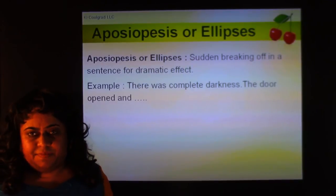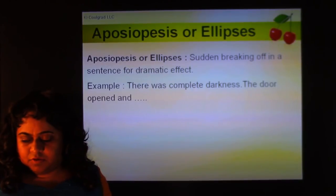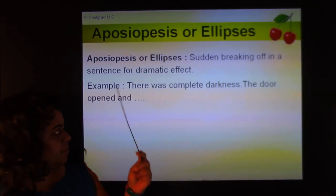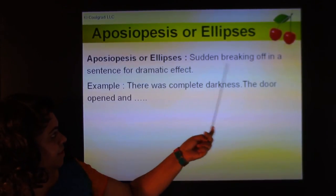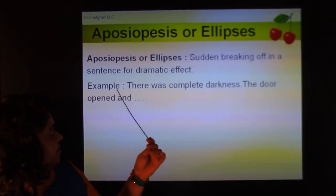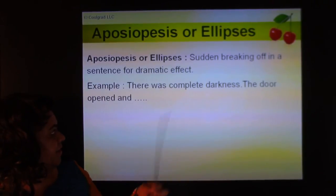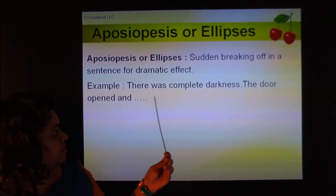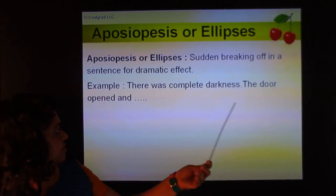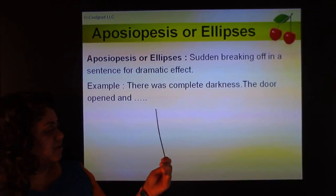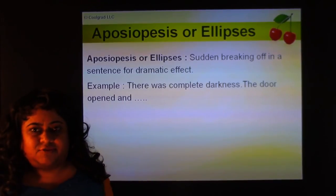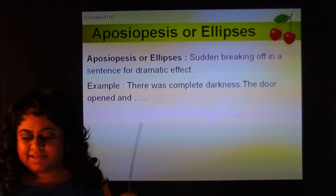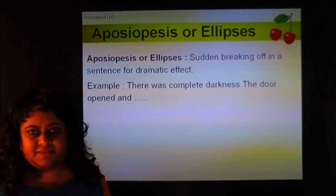Aposiopesis, or ellipsis, is a sudden breaking off in a sentence for dramatic effect. For example: 'There was complete darkness. The door opened and...' — you leave it there, making the listener guess what happened next. This is used for special dramatic effect.